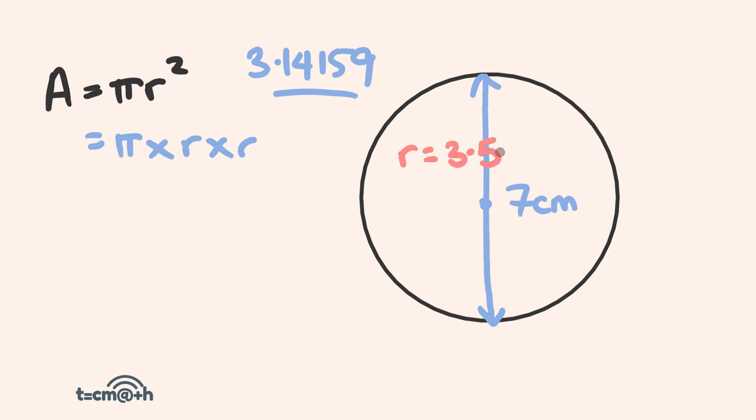So once again we're going to be using area equals pi r squared. Pi, which is 3.14159, times 3.5 centimeters times 3.5 centimeters. We just type these into the calculator, we hit equals, and we get our area, which is going to be 38.48 centimeters squared.